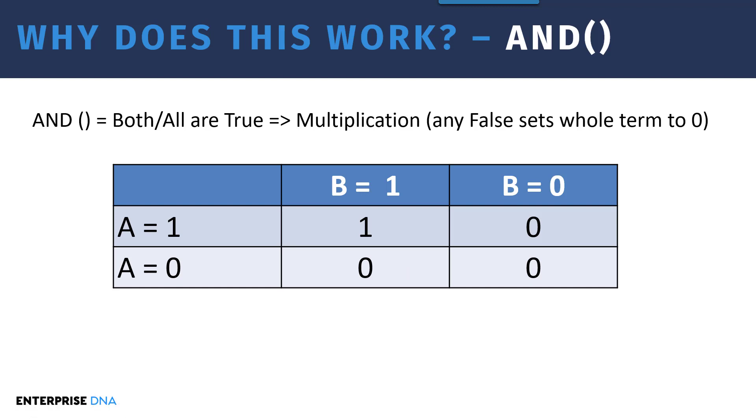If we look at the OR condition, that then is either or any are true, and instead of multiplication that gets addition. So no single false sets the whole term to zero, but any one condition being true increments that condition up by that one. So here we've got A and B are both true, the term gets a two. A is false but B is true gets a one, the reverse gets a one also, and it only gets a zero if both conditions are false.